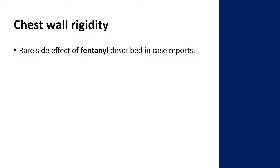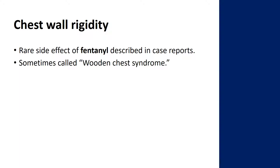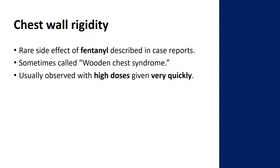Chest wall rigidity is a rare side effect of fentanyl described mostly in case reports. It's almost like the fentanyl paralyzes the respiratory muscles in a flexed position where they just don't move at all — people don't breathe in, don't breathe out, and are difficult to bag. Some people call this wooden chest syndrome or stone chest syndrome because everything all of a sudden goes rigid. It's usually noted with really high doses of fentanyl given very, very fast, and sometimes the doses cited in these reports are quite extreme.